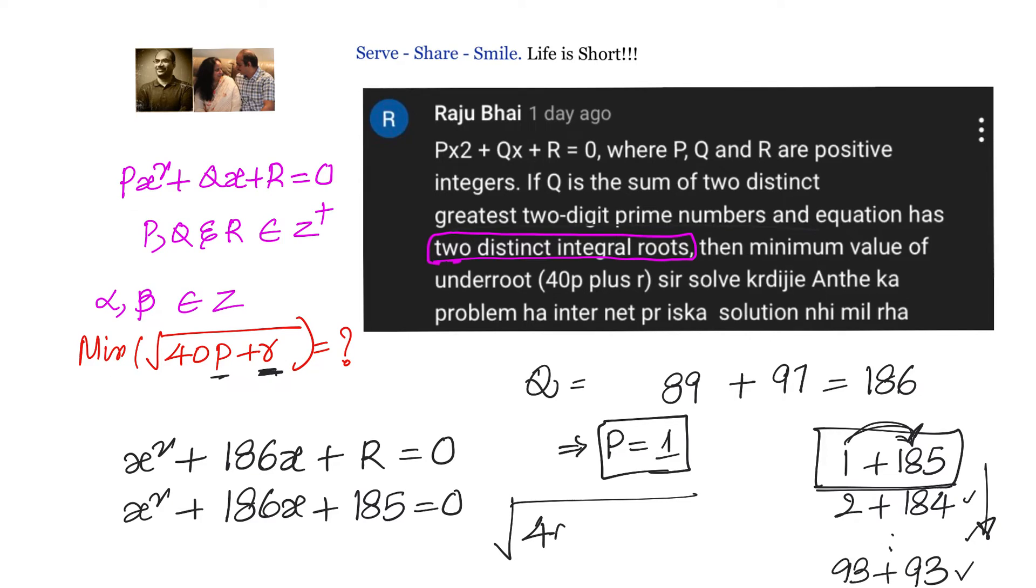Now let's find out what is √(40p + r). Because p is 1, we will have 40 + r is 185, that is √225. So our answer is 15. The minimum value of √(40p + r) in this scenario is equal to 15.